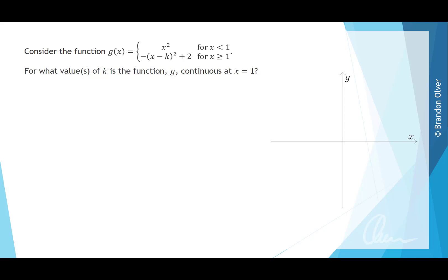Consider the function g which is a hybrid function where the rule x squared exists for x is less than 1, and negative x minus k all squared plus 2 exists for x is greater than or equal to 1. We are asked for what values of k is the function g continuous at x equals 1.